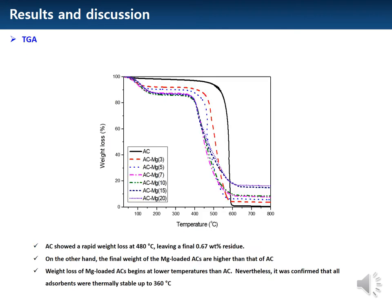As a result of TGA analysis, AC showed a rapid weight loss at 480 degrees, leaving a final 0.67 weight percent residue. On the other hand, the final weight of the magnesium-loaded ACs are higher than that of AC, confirming that the metal was successfully impregnated. Weight loss of magnesium-loaded ACs began at lower temperatures than AC; nevertheless, it was confirmed that all adsorbents were thermally stable up to 360 degrees.